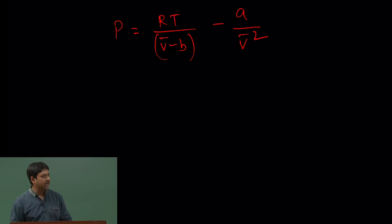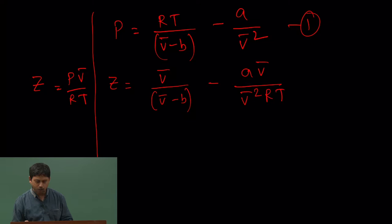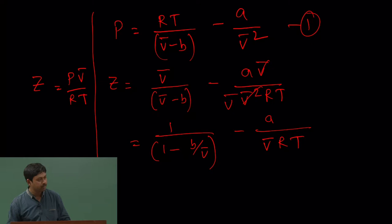Now we calculate Z which is PV by RT. I can multiply equation one by V and divide by RT. Multiplying by V and dividing by RT, I get V/(V-B) minus (multiplying by V and dividing by RT) A/(VRT). This is now the compressibility factor.